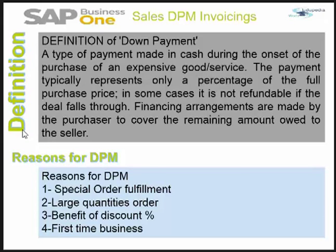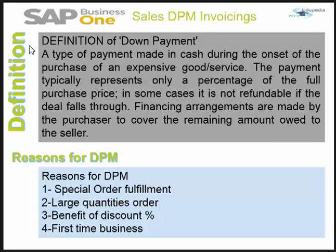Let us first start with the definition of down payment to set the base of this video. A typical definition of a down payment is a type of payment made in cash during the onset of the purchase of an expensive good or service. The payment typically represents only a percentage of the full purchase price, and in some cases it is not refundable if the deal falls through. Financing arrangements are made by the purchaser to cover the remaining amount owed to the seller.